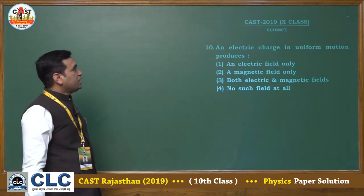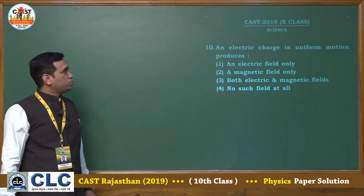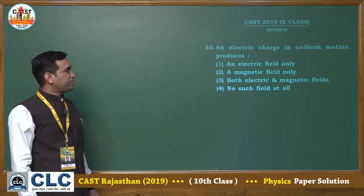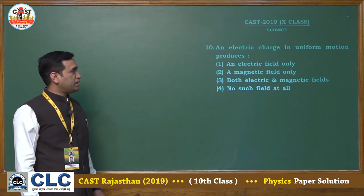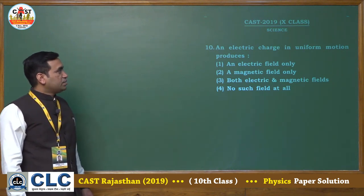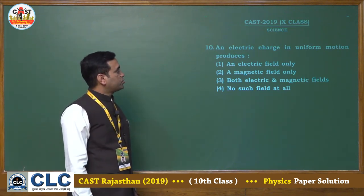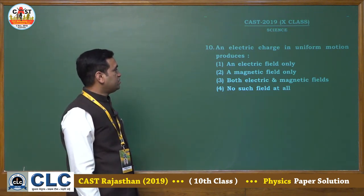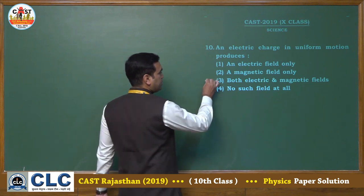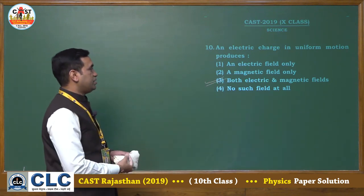The next question: an electric charge in uniform motion produces — electric field only, magnetic field only, or both electric and magnetic field? The correct option is third: it produces both electric and magnetic field.